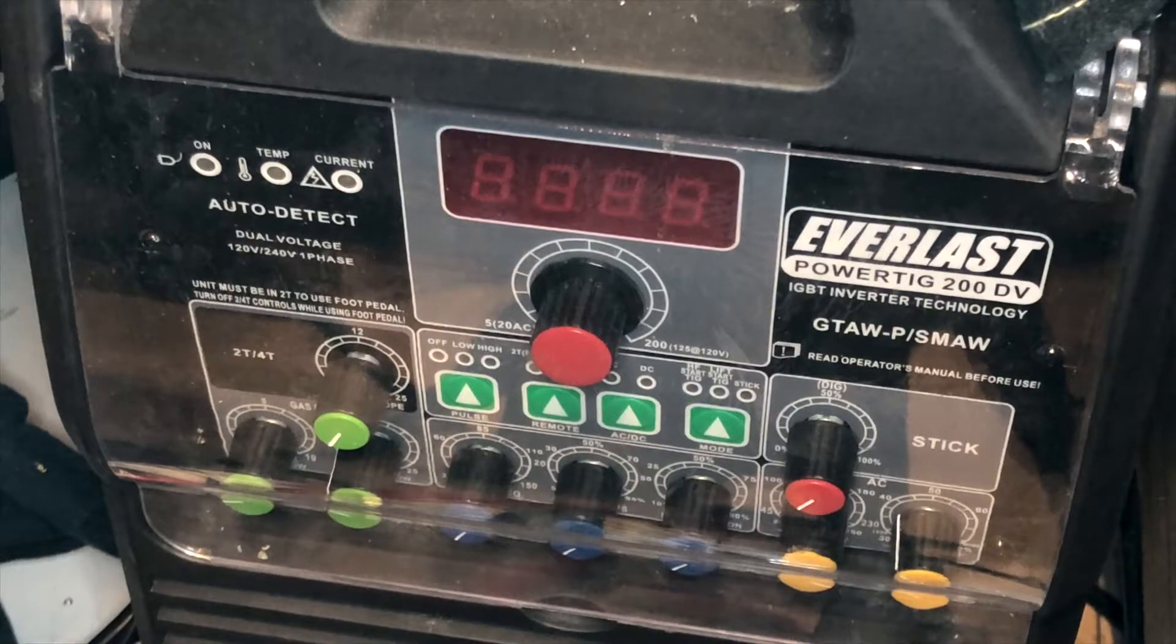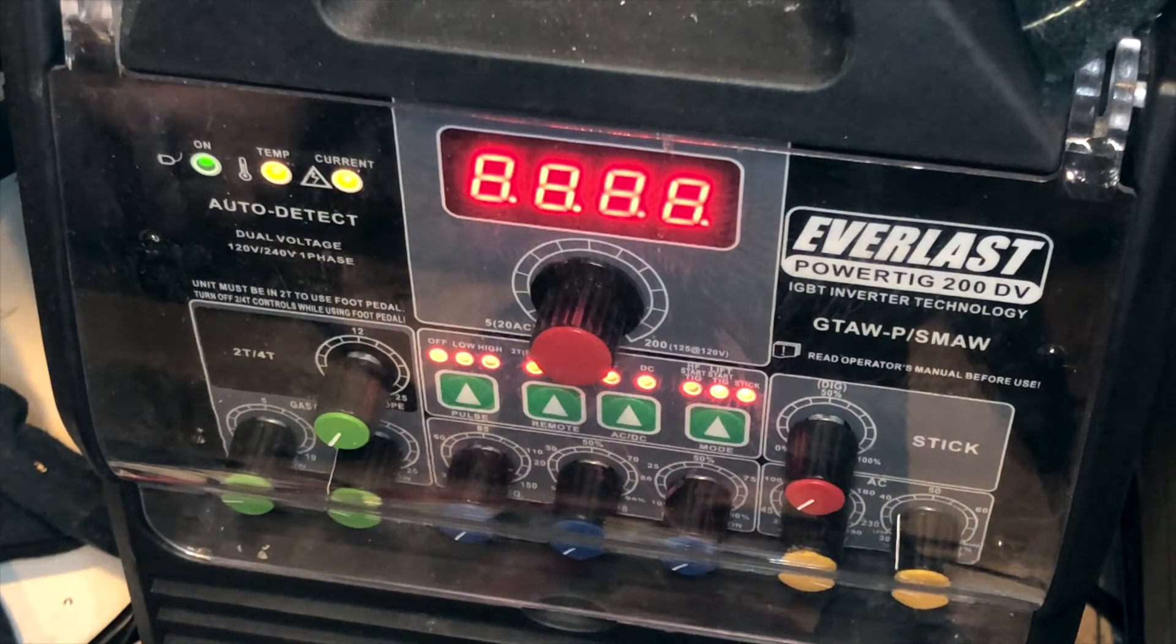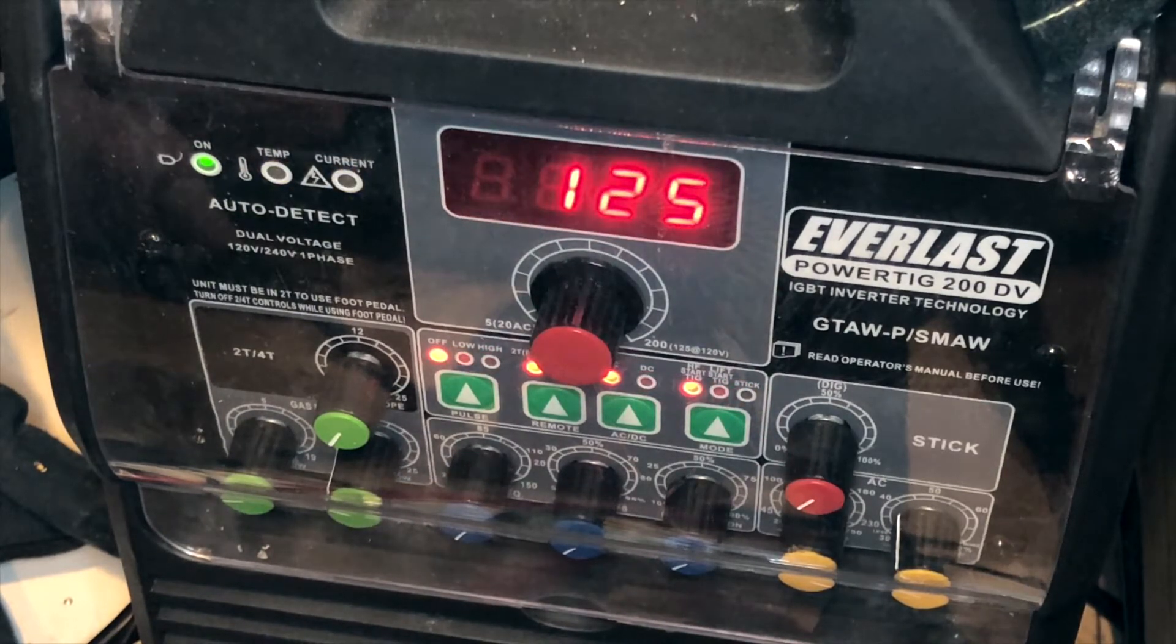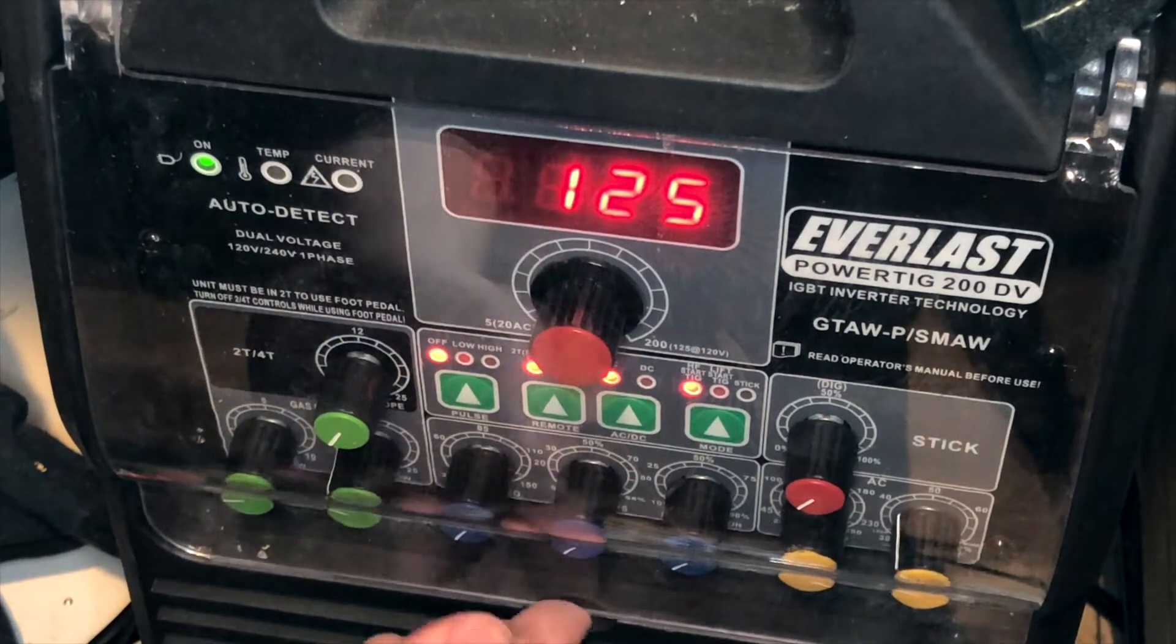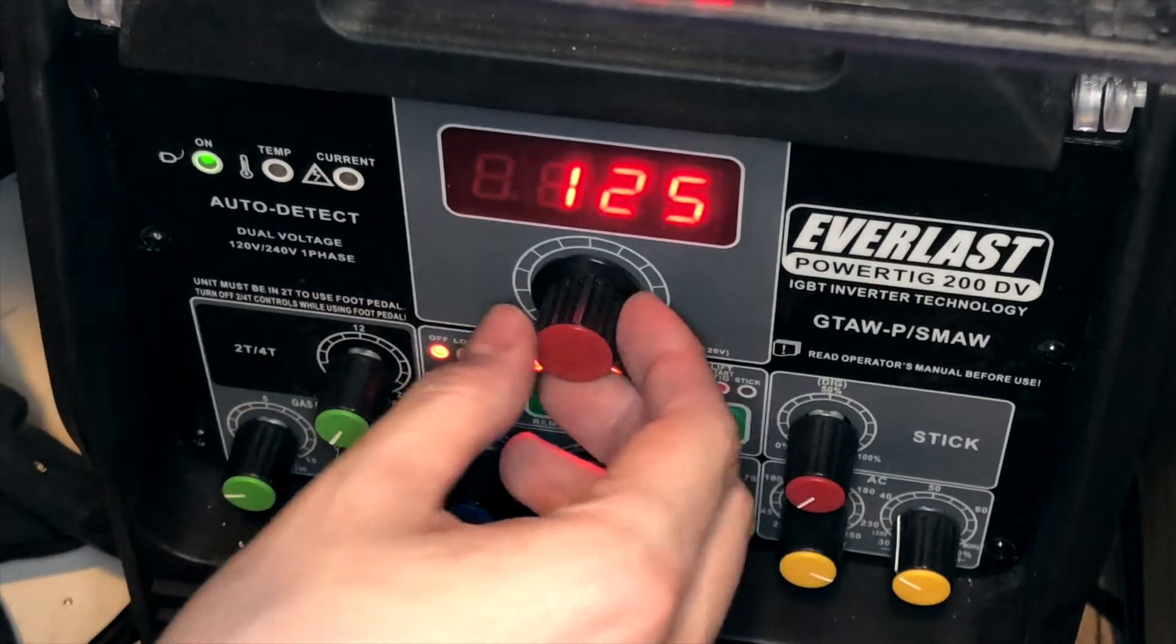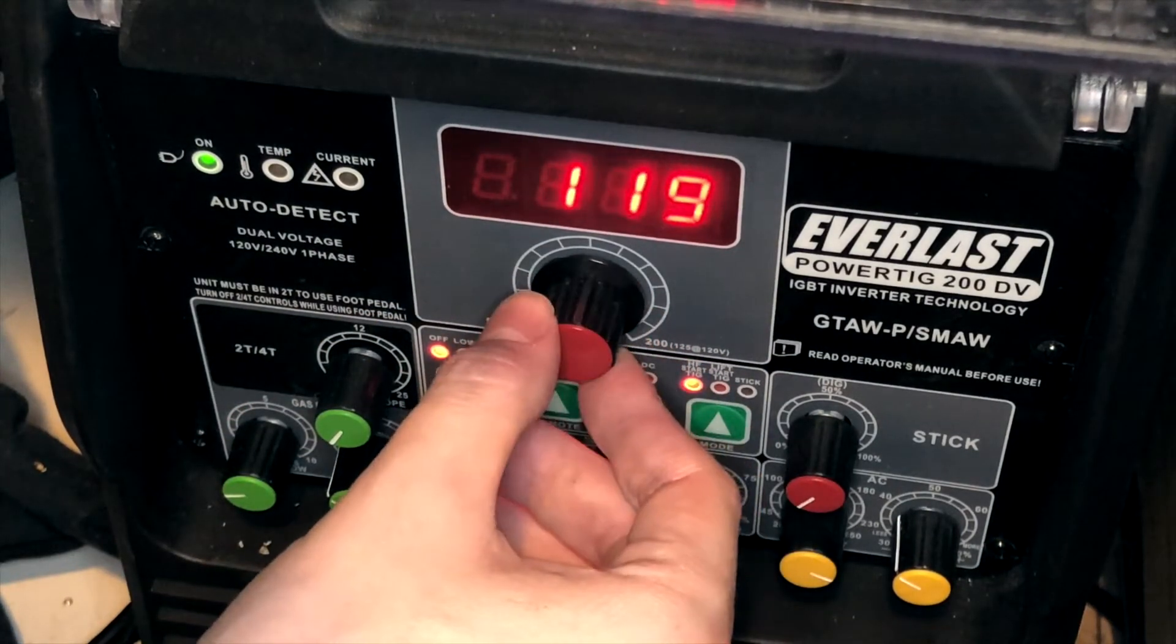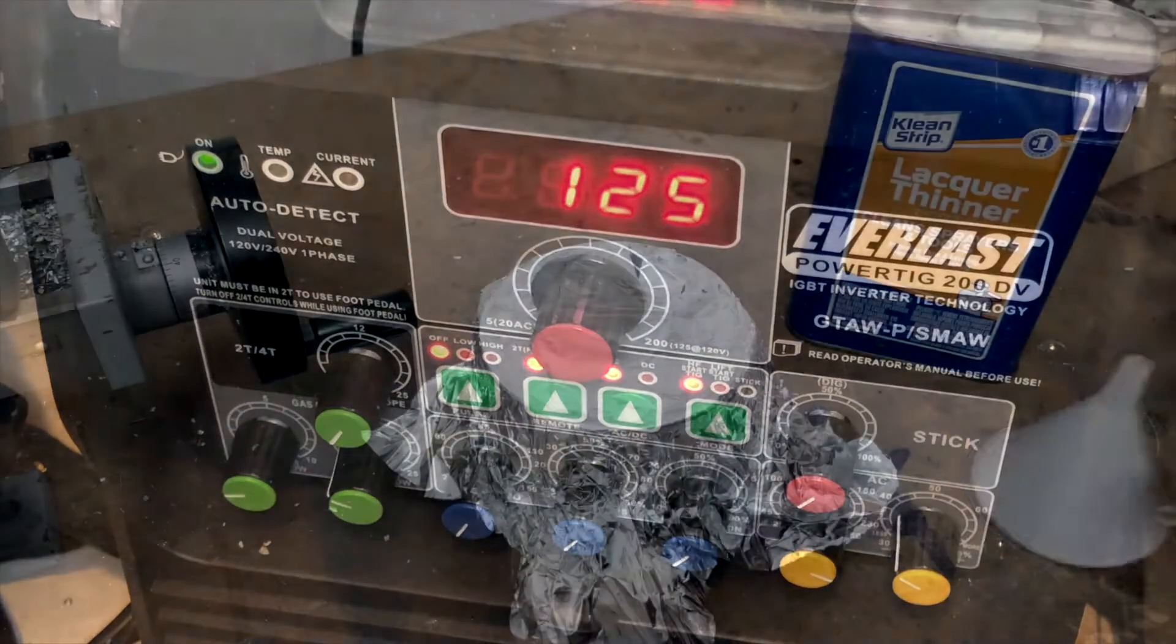This is a 200 amp TIG welder, but to get the full amperage, I need a 220 volt outlet. And surprisingly, my basement apartment in Brooklyn does not have one of these plugs, so I have to go with the standard 110, which only gives me about 125 amps. Ideally I would have a few more amps, but I don't have any other options, so I have to work with what I got.